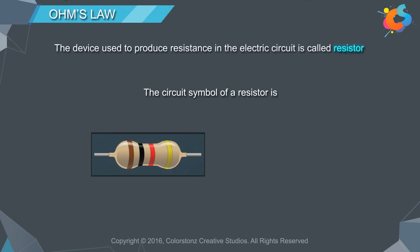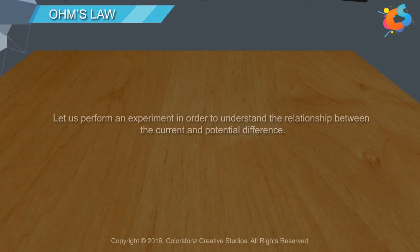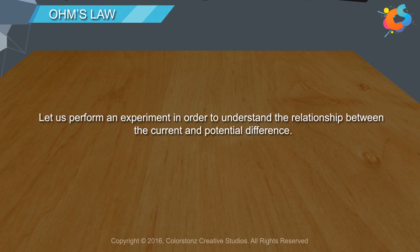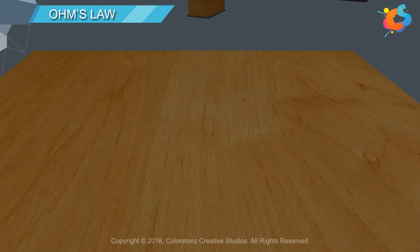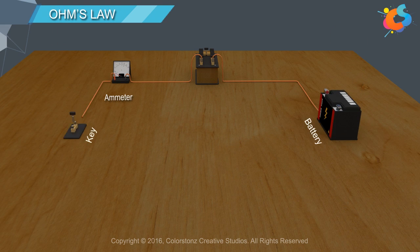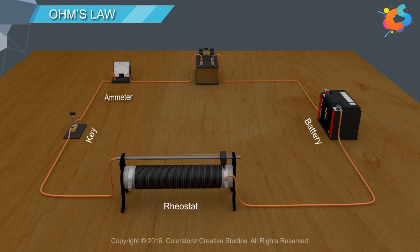The circuit symbol of a resistor is shown here. Let us perform an experiment in order to understand the relationship between the current and potential difference. The circuit consists of a resistance box, a milliamp meter to measure the current flowing through the circuit, a battery, a key, a rheostat to vary the current and potential difference across the circuit, and a voltmeter to measure the potential difference across the bulb.